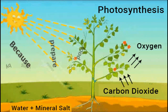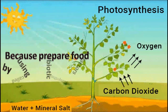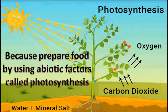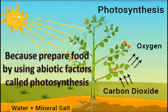Plants prepare food by the photosynthesis process using abiotic factors. Plants utilize carbon dioxide, water, and minerals in the presence of sunlight to prepare food by photosynthesis.